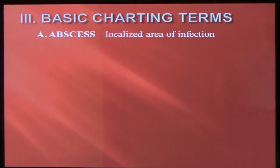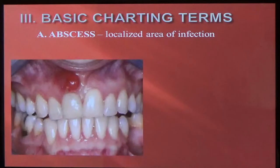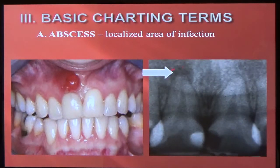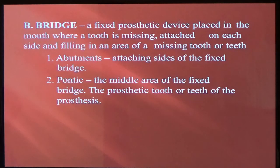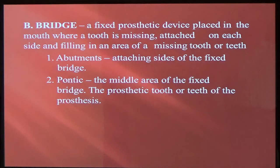Basic charting terms. An abscess is a localized area of infection — this shows an abscess up on the gum area of an anterior incisor, and you see a shadow on the x-ray. A bridge is a fixed restoration that is cemented on a tooth when a tooth is missing. A bridge consists of two parts: abutments, which are the attaching teeth, and then the pontic, which is the tooth that's being replaced. So you've got abutments or anchors, and then the missing teeth, which are the pontics.